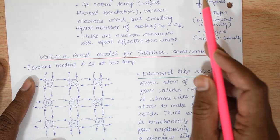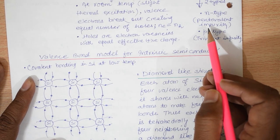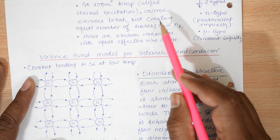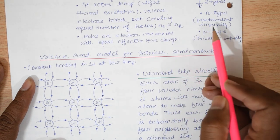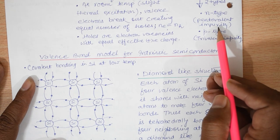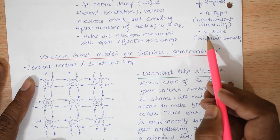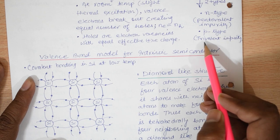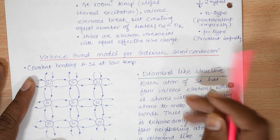We get an N-type extrinsic semiconductor when we dope a pure intrinsic semiconductor with a pentavalent impurity. Pentavalent impurities are atoms of the 15th group. We get a P-type semiconductor when we add trivalent impurity to intrinsic semiconductors.